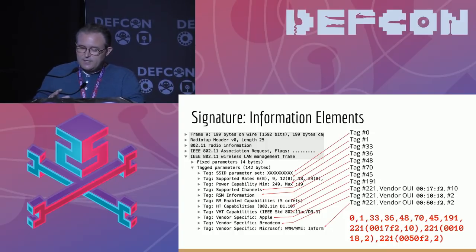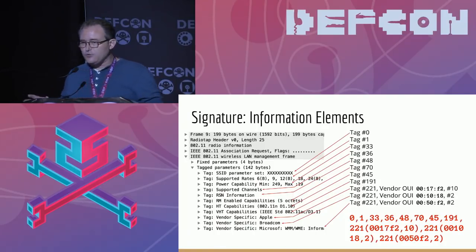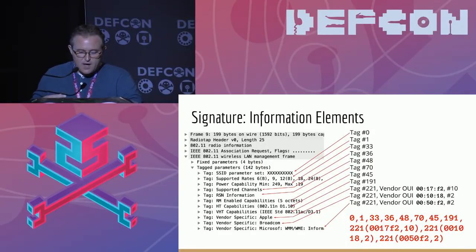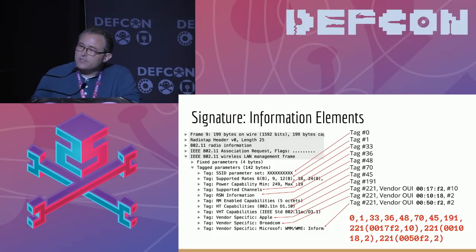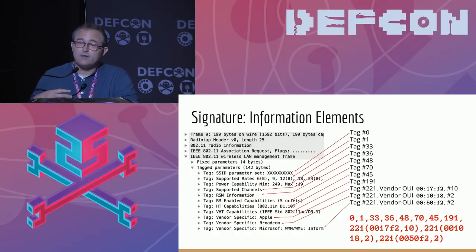The signature lists the tag numbers of the IEs that are present in the frame in the order they appear, as a text string of decimal numbers. For vendor extensions, it additionally includes the OUI of the vendor and that vendor's subtype. This first part of the signature is most strongly influenced by the OS of the client device where the client Wi-Fi stack is implemented, and next most strongly influenced by the Wi-Fi chipset — both in terms of the standard it supports and any vendor extensions that the vendor implements in their driver.